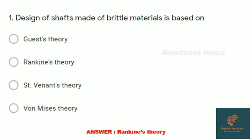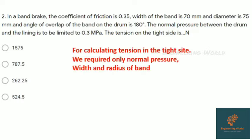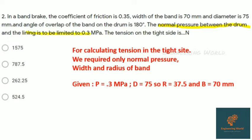The next question is: In a band brake, the coefficient of friction is 0.35, width of band is 70 mm, and diameter is 75 mm. The angle of overlap of the band on the drum is 180 degrees. The normal pressure between drum and lining is limited to 0.3 MPa. The tension on the tight side is...